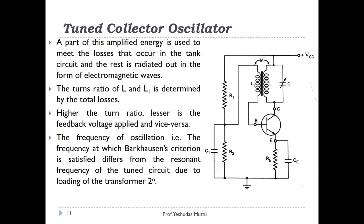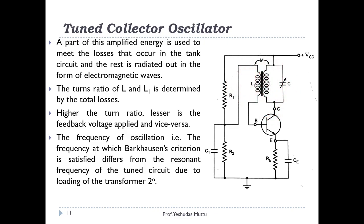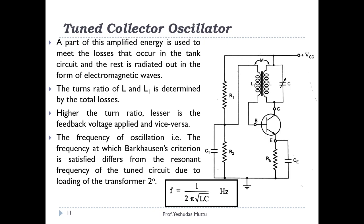The frequency of oscillation — the frequency at which Barkhausen's criterion is satisfied — is not the same as that of the tuned circuit alone, because the transformer introduces a loading effect. The frequency of oscillation is given as f = 1/(2π√(LC)).